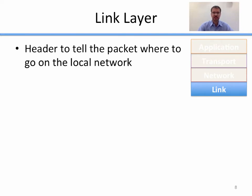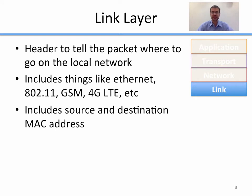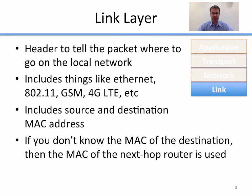The link layer is a header put on data to tell the packet where to go on the local network, because link layer networks are all local. It could be 802.11 (the wireless standard for Wi-Fi), GSM, 4G, anything involving local routing. The link layer includes source and destination MAC addresses. If you don't know the MAC address of the ultimate destination, use the MAC address of the next hop router you do know. If I want to send a packet to Google, I put the MAC address of my nearest router — not Google's server — and that router figures out who's nearest to keep passing it along.